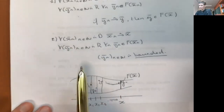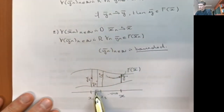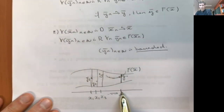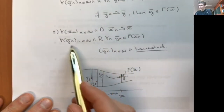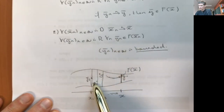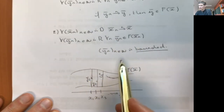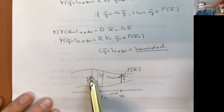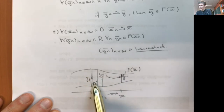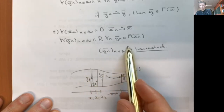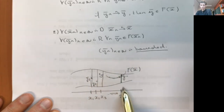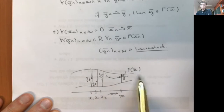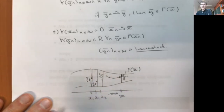The second condition says: for any sequence x_n converging to x, and any sequence y_n in the image set, this has to be bounded. So it's impossible for this sequence to go to plus or minus infinity.